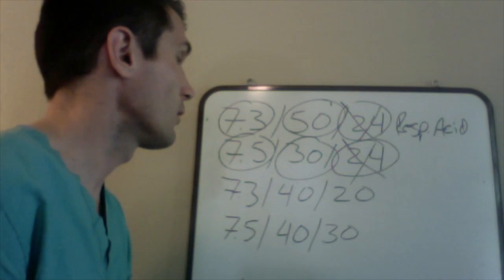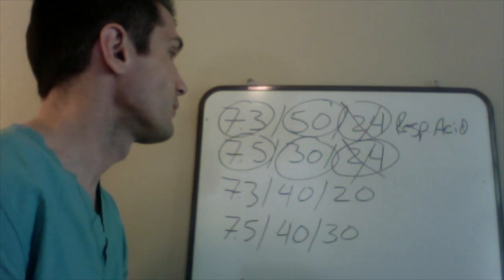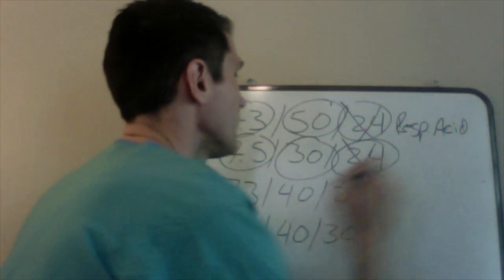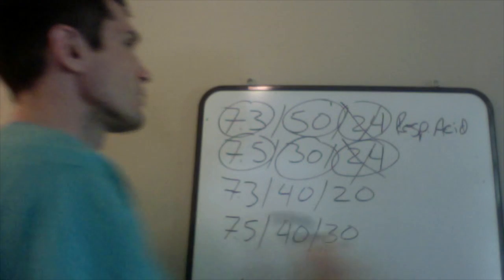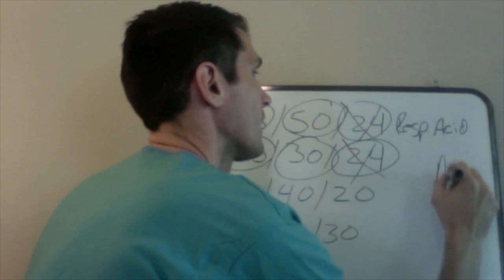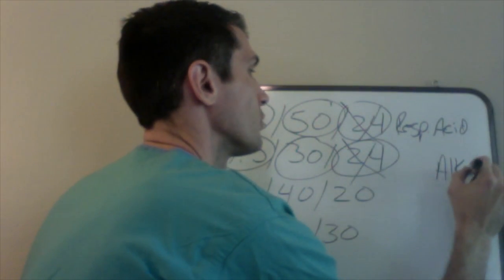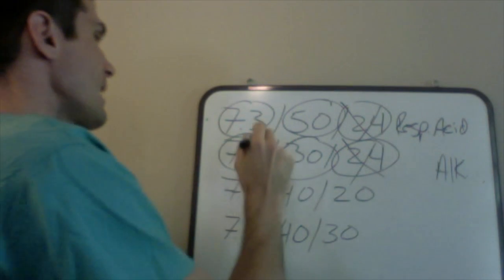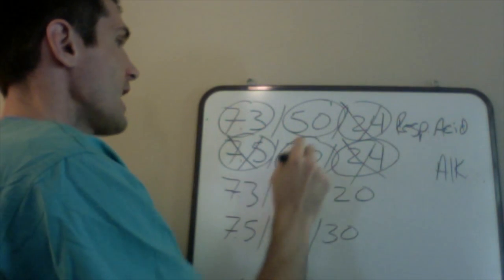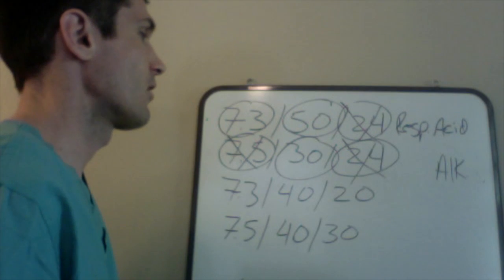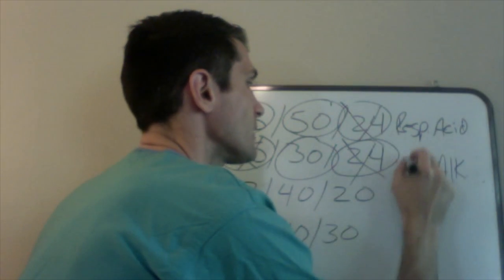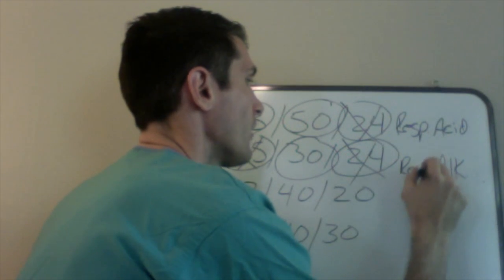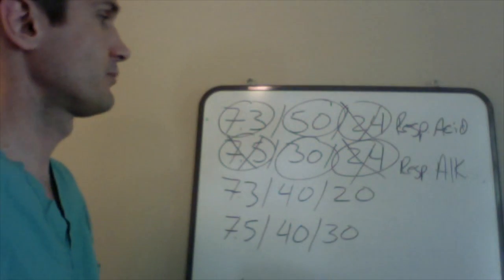Bicarb or CO2, it was the CO2, so we're going to call this one first we found out what the pH was, so I can write alkalotic, I'm just going to put ALK for short. So I named that portion of it, now I'm going to name what parameter is out of range and it is the CO2, so that is the respiratory parameter, so I'm going to call that respiratory alkalosis. Does that make sense to everybody? So we're done with those two, those are pretty easy.